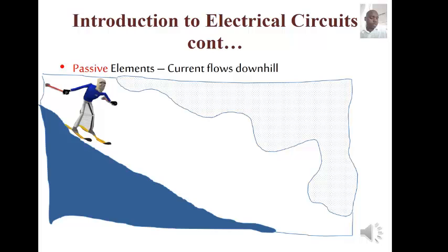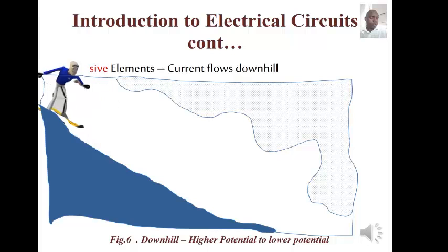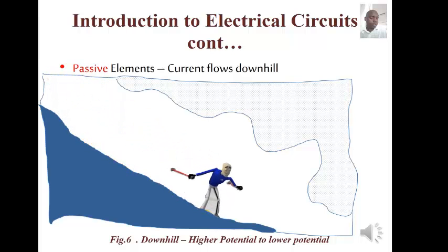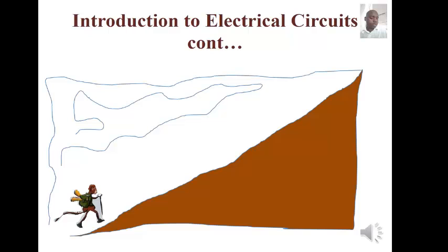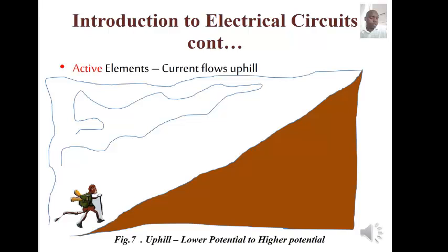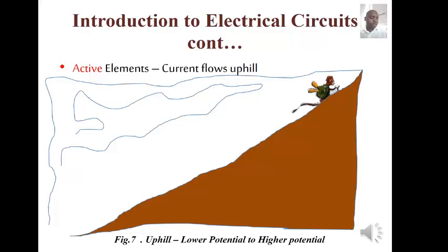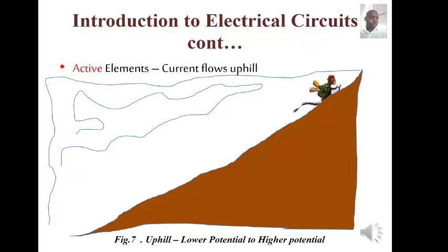In a passive element, the current moves downhill — like someone going downhill who has to lose energy. That's why we say there is a potential drop across a passive component. For active components, the current moves upward, so we say there is a potential rise across a source, because it gives energy to the circuit.